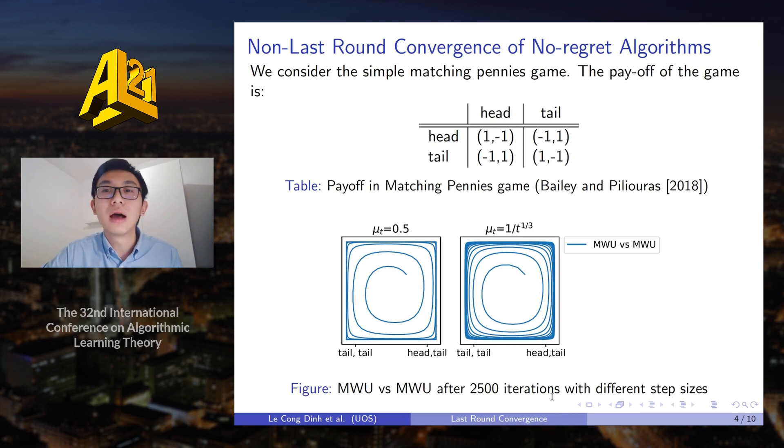As Bailey and Piliouras 2018 proved that in the case both players use multiplicative weight update algorithms, then the strategy will move away from the Nash equilibrium and come towards the boundary of this game. So how can we tackle this problem?